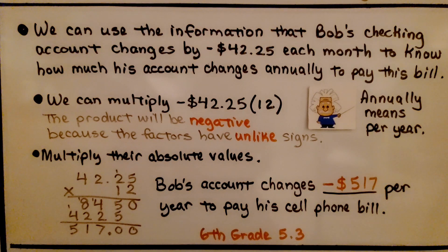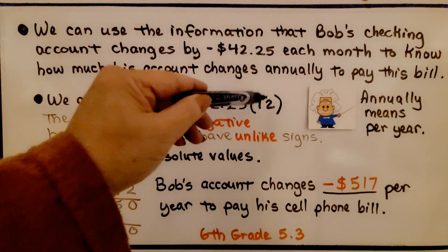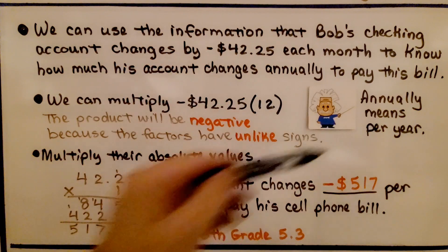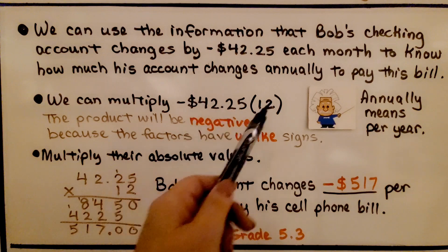We can use the information that Bob's checking account changes by $42.25 each month to know how much his account changes annually to pay this bill. Annually means per year. We can multiply negative $42.25 times 12 months. The product will be negative because we have factors with unlike signs.